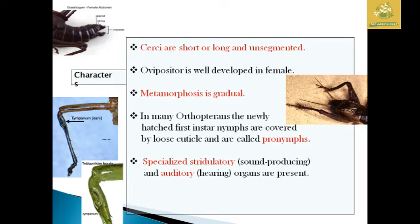The hind wings are membranous with a large anal area and are folded in a longitudinal pattern between veins, kept beneath the tegmina so they cannot be damaged. The cerci are short or long and mainly unsegmented. The ovipositor is well-developed in females. Metamorphosis is gradual. Newly hatched first instars are covered with loose cuticles, called pronymphs. Specialized stridulatory and auditory organs are present in these insects.